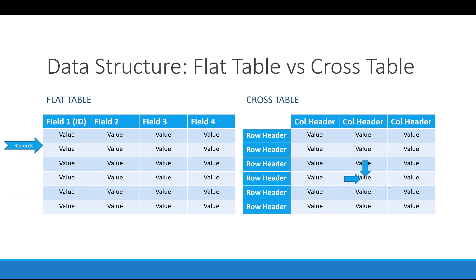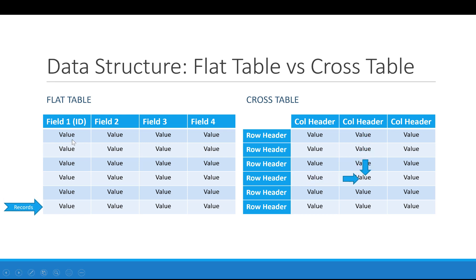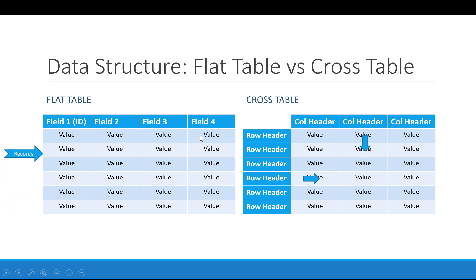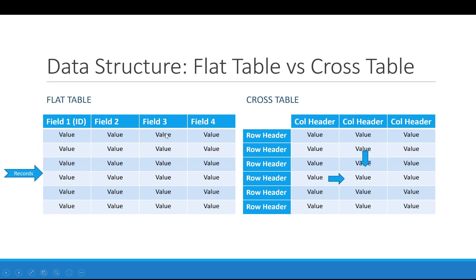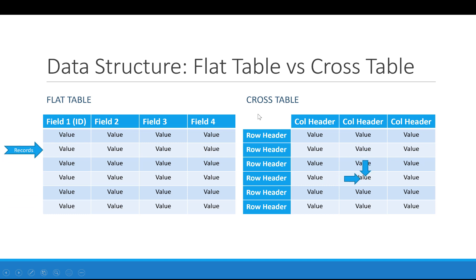To read information from a flat table, most of the time you will be reading a whole row — that's why we call them records. Each row here is called a record, so to get the full information you need to read the whole row. A flat table is basically what you would see in a database structure — it is essentially a database table.